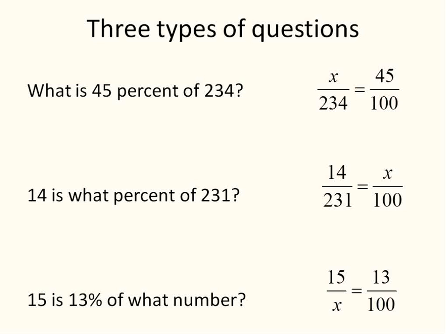So the advantage to the proportion type is that you're using cross multiplying each time no matter what. The challenge is setting it up properly. The advantage of method number one is that you'll be able to solve it directly each time. And the challenge is manipulating the equations after they're set up. So there you go, that's how to solve word problems with percentages.